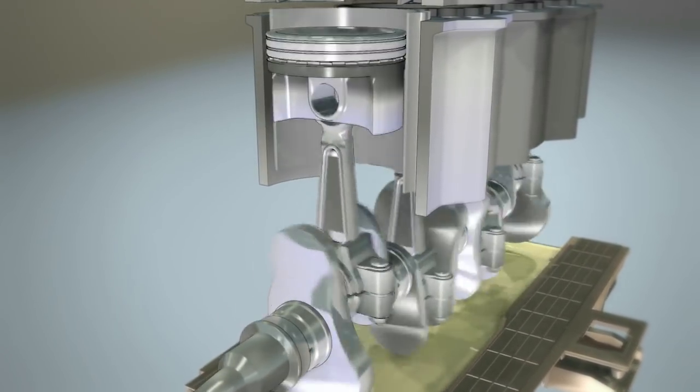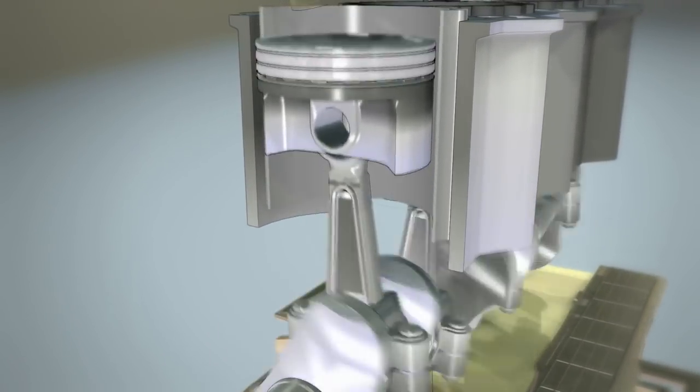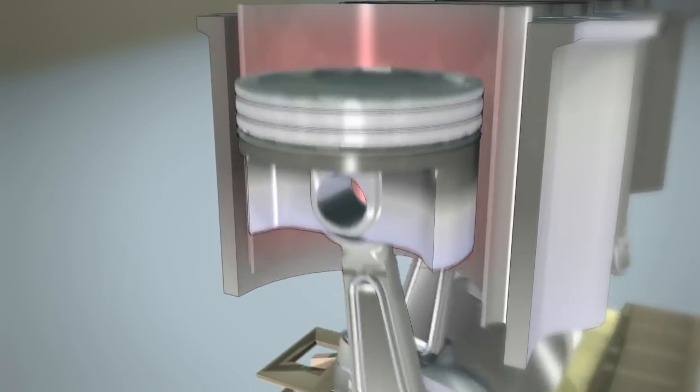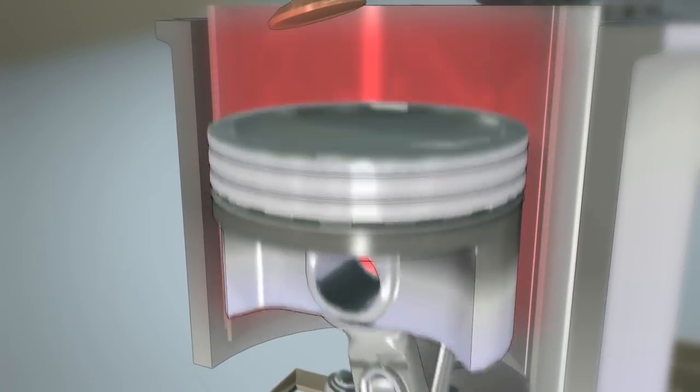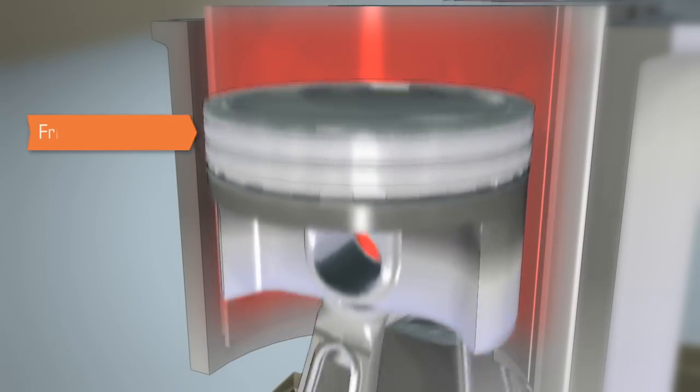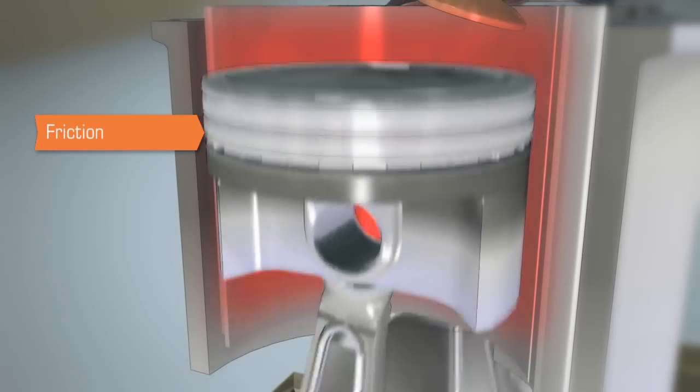Although engine oil is the primary source of lubrication, engine design, fuel combustion, and higher temperatures make the upper area of the cylinder a harsher environment for the engine oil. This area becomes a significant source of friction.